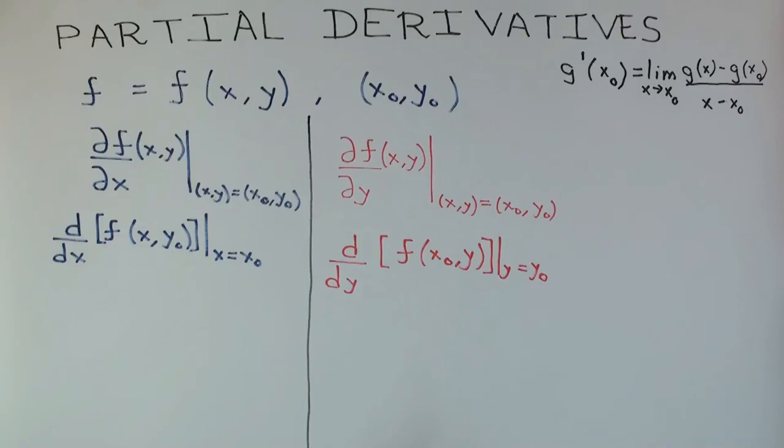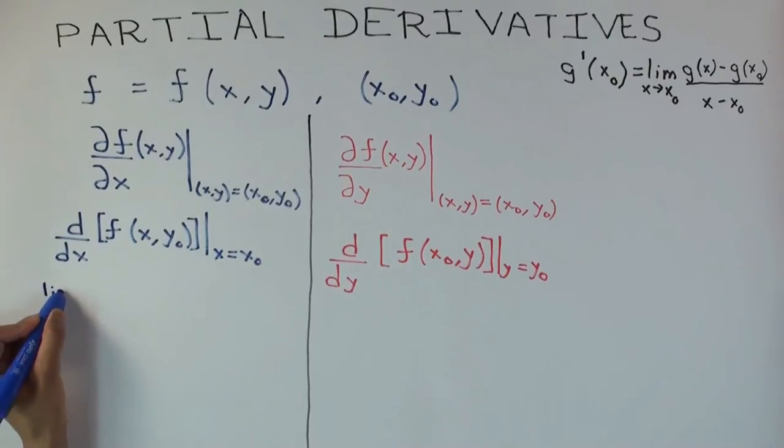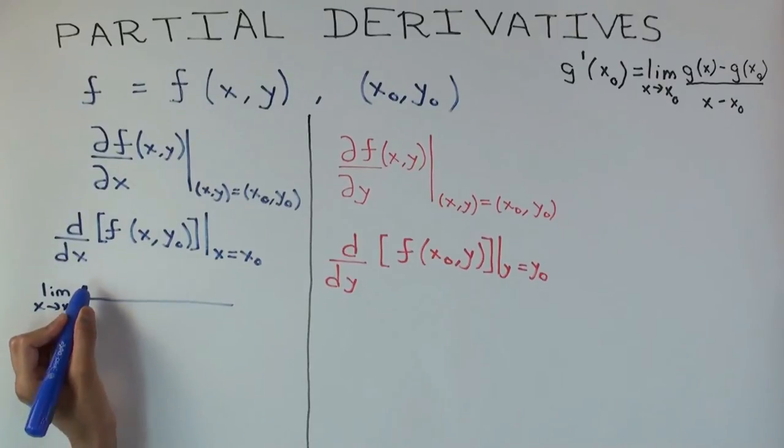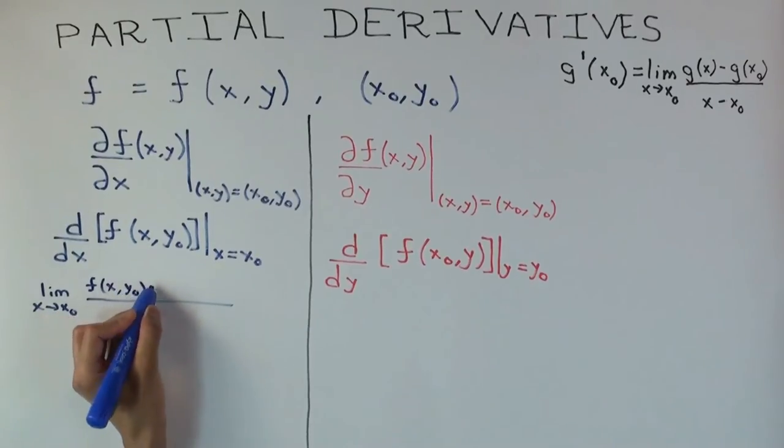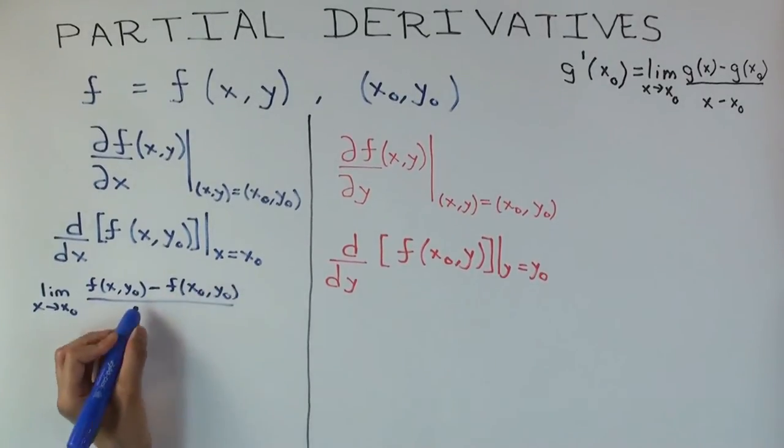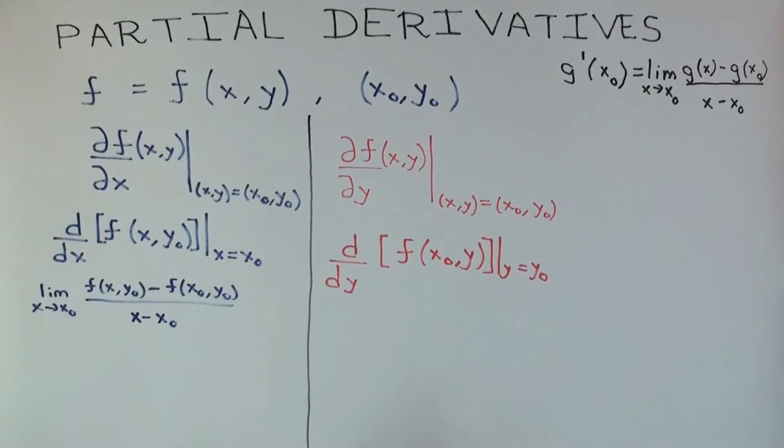Let's try to use that to write down these definitions. For x, that's going to be the limit as x approaches x0. The numerator is f(x,y0) minus f(x0,y0), divided by x minus x0. This is a definition as a limit. Notice x0 and y0 are constants, x is approaching x0.